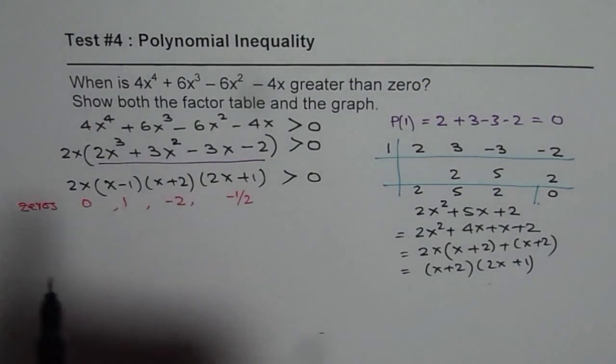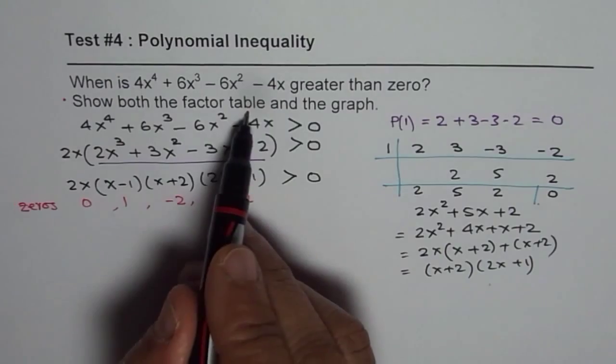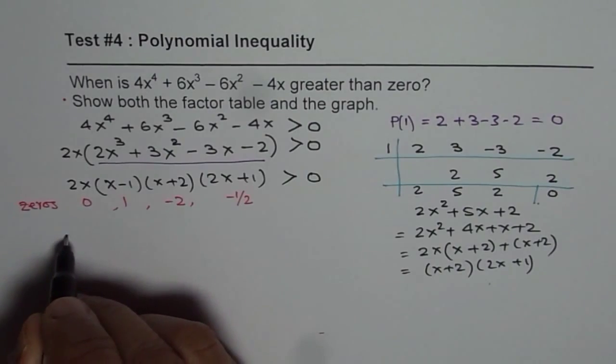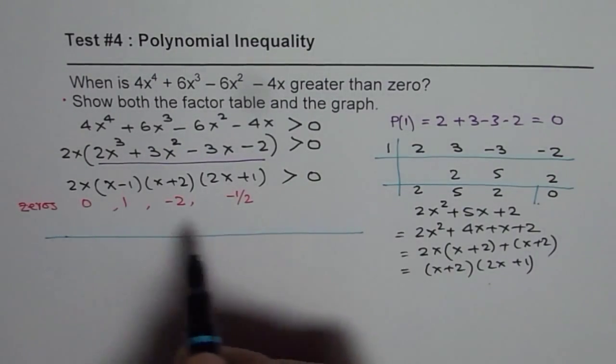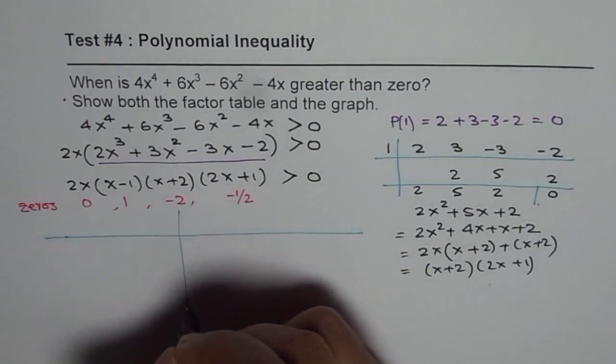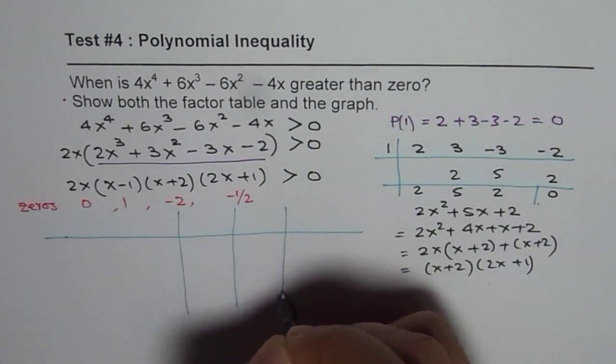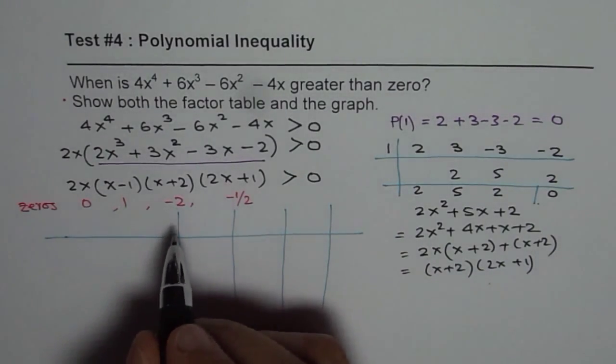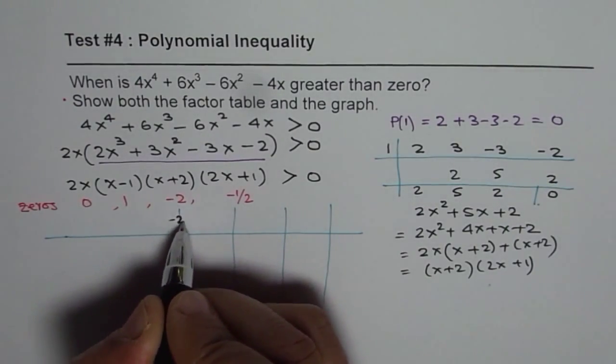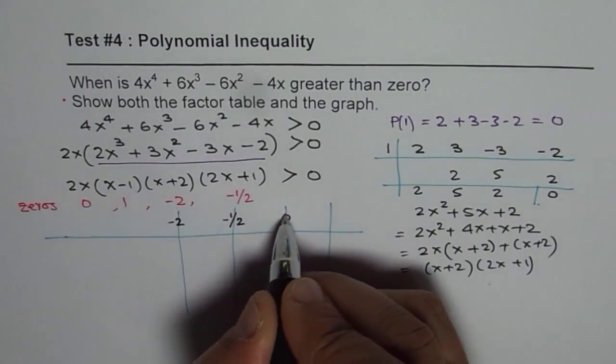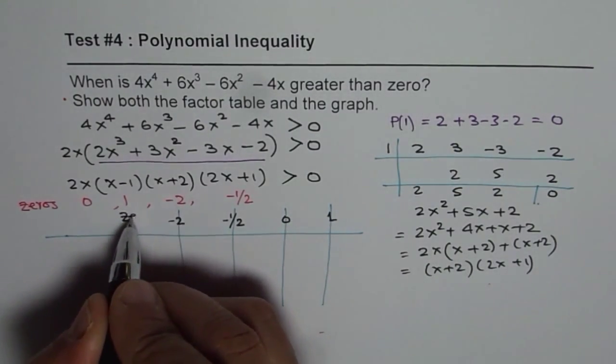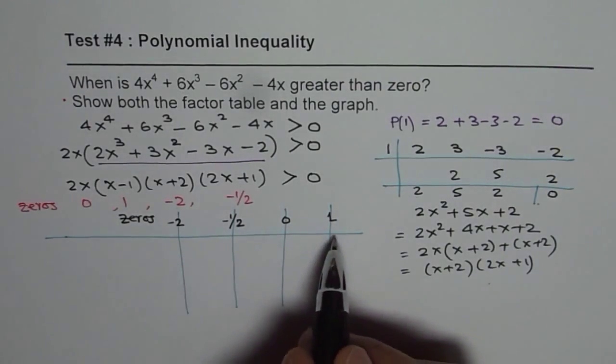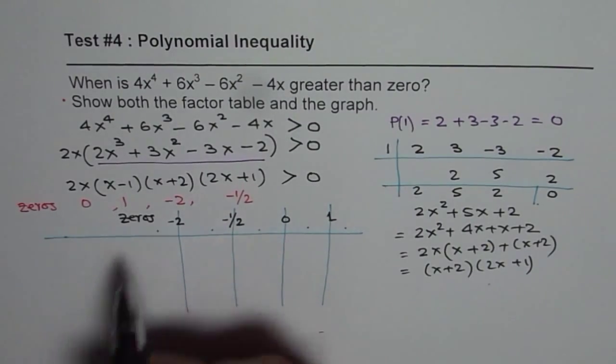Now as mentioned in the question, we need to show both factor table and the graph to find the answer. So let's first make the factor table. So we have 4 factors. These 4 zeros will divide the interval in 5 regions. So minus 2 as my first zero, then minus half, then at 0 and at 1. So these are the zeros. These zeros have divided this interval into 1, 2, 3, 4 and 5 parts.